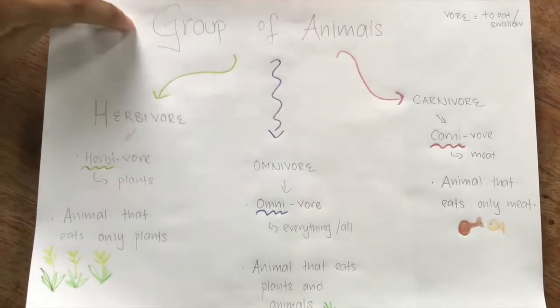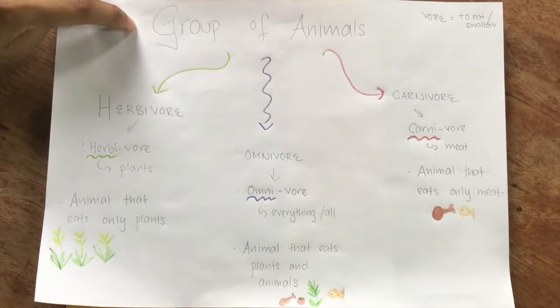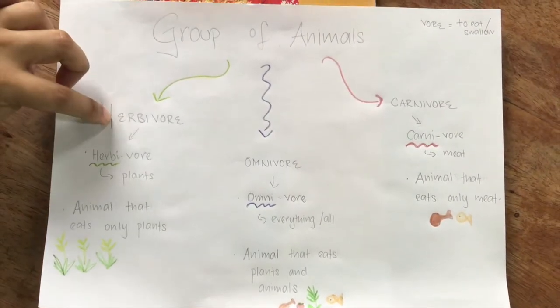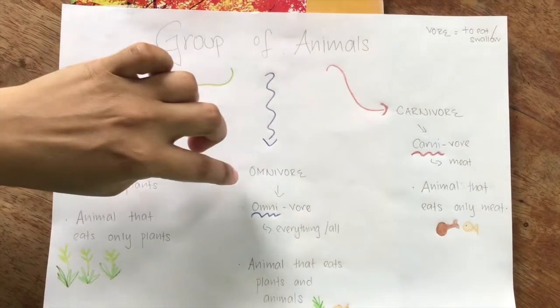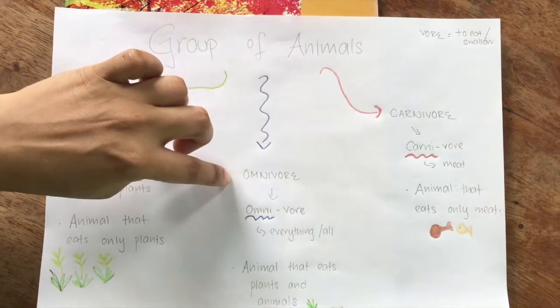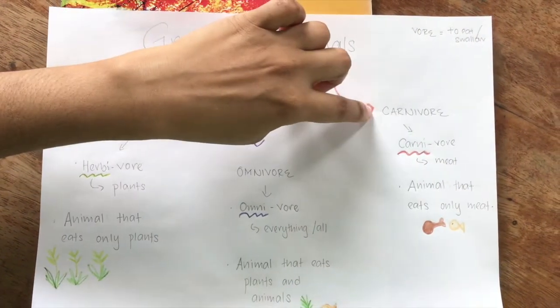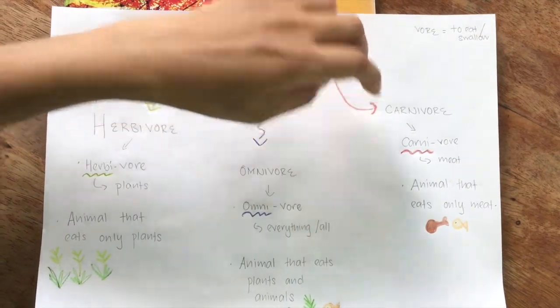Groups of animals: Herbivore, Omnivore, Carnivore.